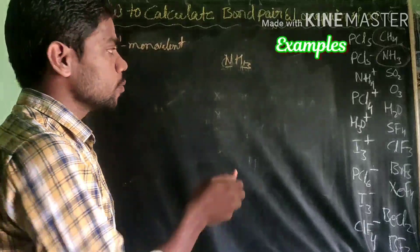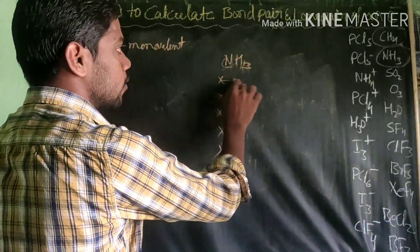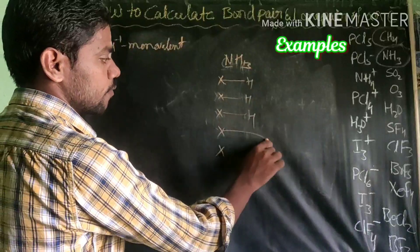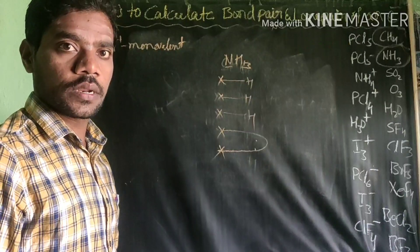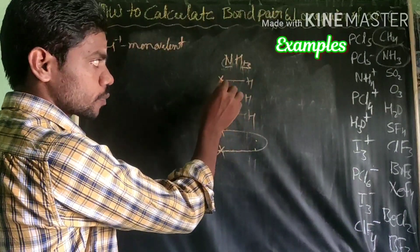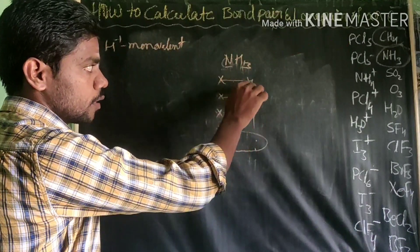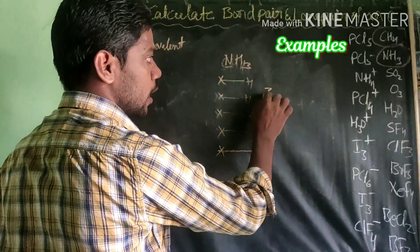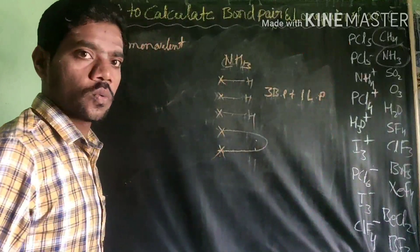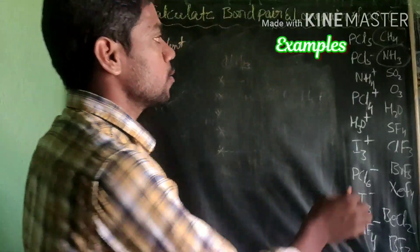Therefore, ammonia has 3 bond pairs and 1 lone pair of electrons. Next, we go for SO2. Sulfur is in the 16th group, so we write 6 stars for 6 valence electrons. Oxygen is bivalent, so it takes 2 electrons and forms 1 bond — giving 2 bond pairs and 1 lone pair for SO2.